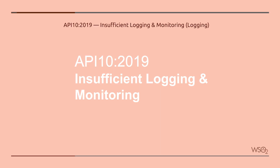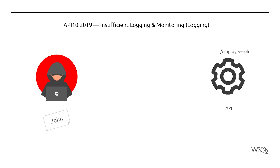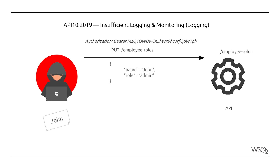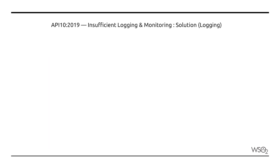Insufficient Logging and Monitoring. John has stolen Mary's access token. He uses this token to view and alter some data. Mary finds out about this and informs the API owner. The API owner revokes the compromised access token and issues Mary a new one. However, the data that John had viewed or altered is unknown, since the API does not produce enough logs to investigate, making it difficult to determine what data may have been compromised by John's actions.